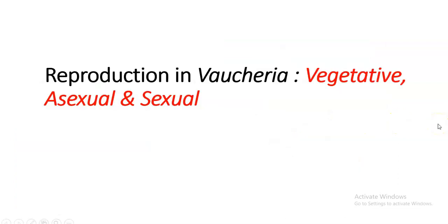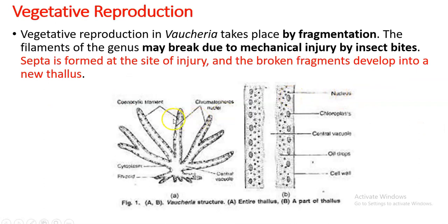Vegetative reproduction is very simple. One particular fragment will be cut off from the thallus, fall onto the substratum, and form a new thallus. That septum formation will be due to an injury, herbivore chewing the algae, or any similar reason. From that injured area a septum will be formed, and the falling fragment will form a new thallus.